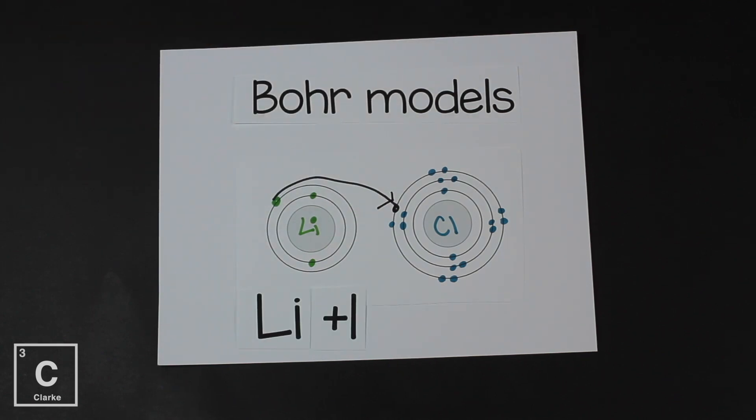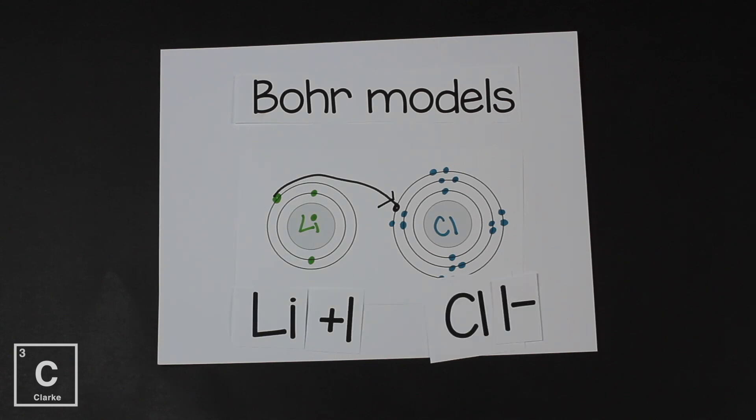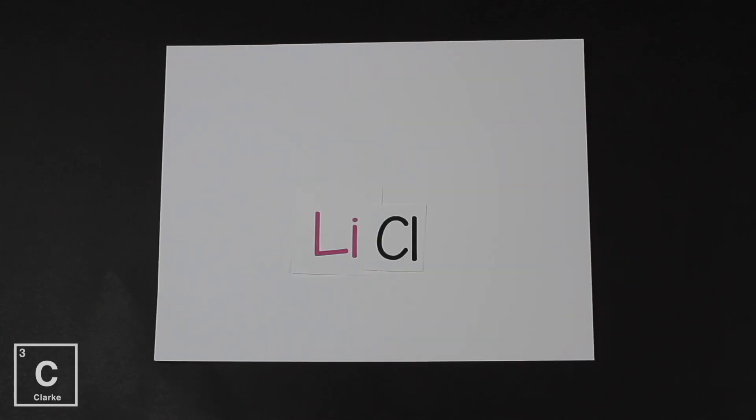Chlorine, which had seven valence electrons, now it stole that electron and so it has eight. That means it has a full S and a full P. Now chlorine is very happy and it's also a negative one charge. And so lithium's plus one and chlorine's minus one, they just join right together.